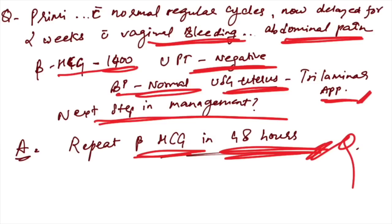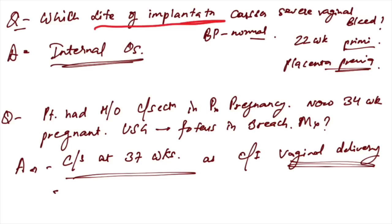Which site of implantation causes severe vaginal bleeding? Question was given: 22-week primigravida with blood pressure normal came to emergency with profuse vaginal bleeding. This is seen in 22 weeks placenta previa. When implantation is on internal os, there is severe vaginal bleeding.